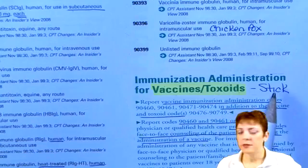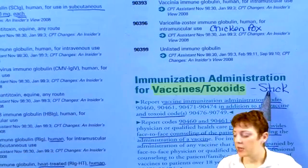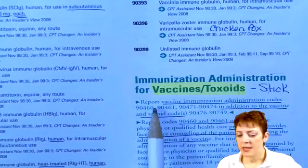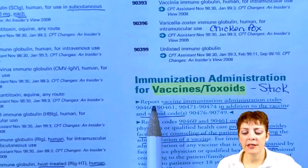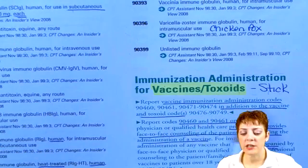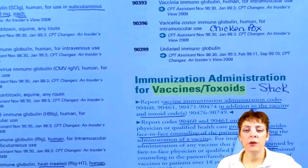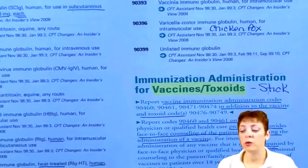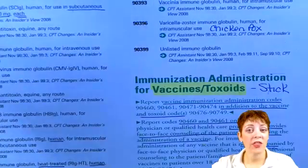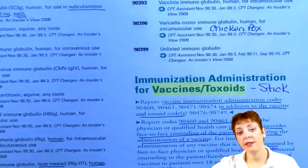You have to make sure you're using the right stick code with the right stuff code. The guidelines tell us to report vaccine immunization administration codes with this range, in addition to the vaccine product codes. This is one of the rare instances in CPT where they actually have codes for a product or item — most of those we find in HCPCS.